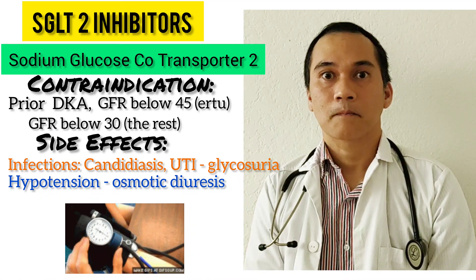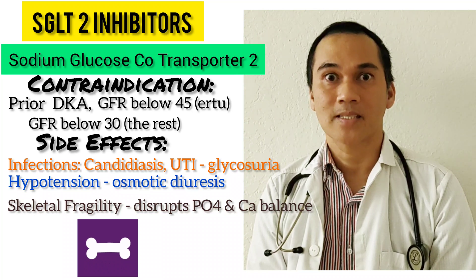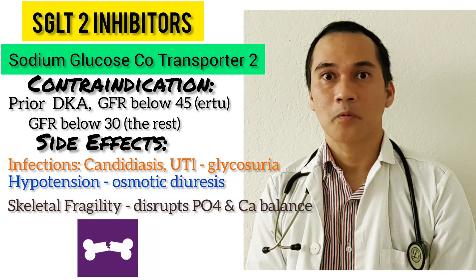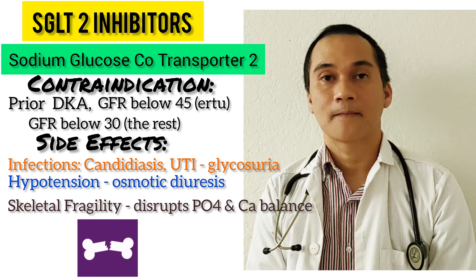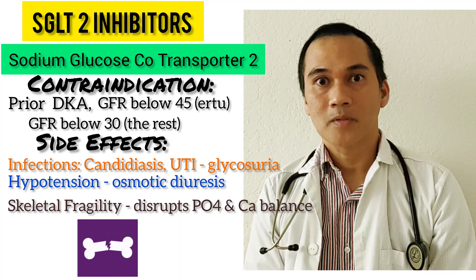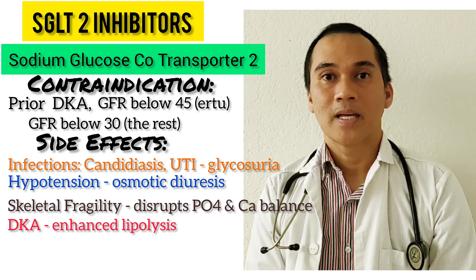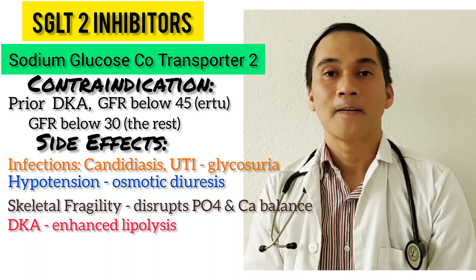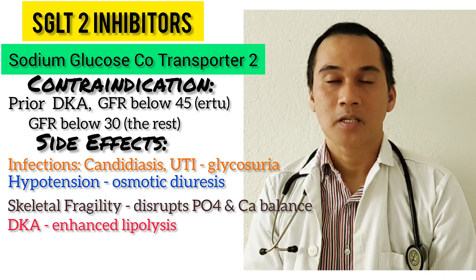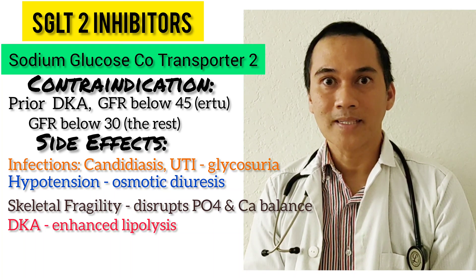It can also cause skeletal fragility because it disrupts phosphate and calcium homeostasis. In fact, canagliflozin was reported to cause osteoporosis at the hips and lower spine. Another side effect is diabetic ketoacidosis, but it is euglycemic — meaning blood sugar is not above 250 mg/dL. DKA happens not because of excess glucose, but because the body sources fats as fuel, and the byproduct of fat burning is ketones.